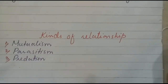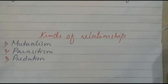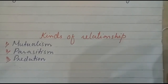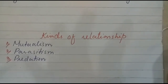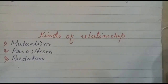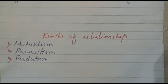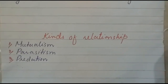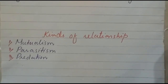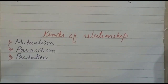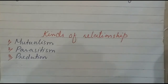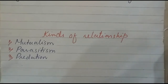The third type of interaction is predation — a relationship between two organisms where one kills the other for food. For example, a lion or fox kills other animals for food. This relationship is called predation.